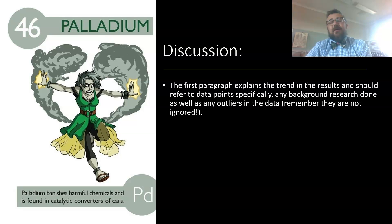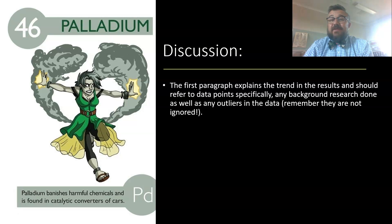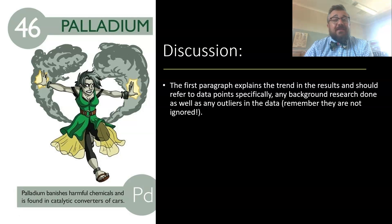In our discussion, we're going to break this down paragraph by paragraph. The first paragraph explains the trends and should refer to data points specifically — actually mention individual data points — as well as any background research. You're going to talk about background research in your introduction to a report, so it's important, but the discussion should refer back to it.